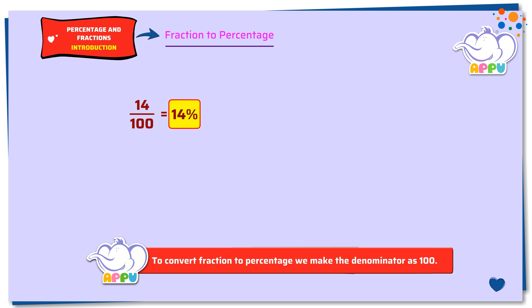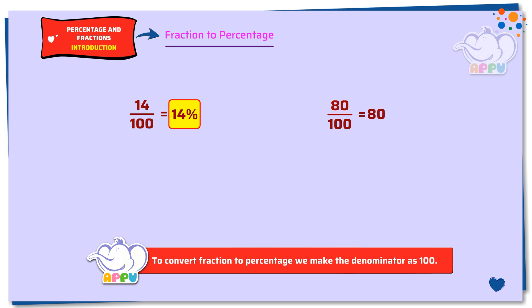80 by 100. We see that the denominator is 100. So 80 by 100 equals 80%.